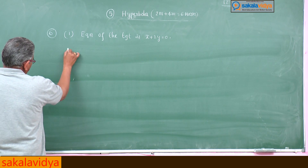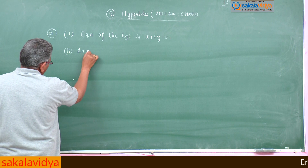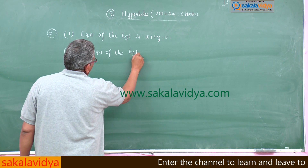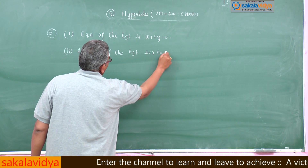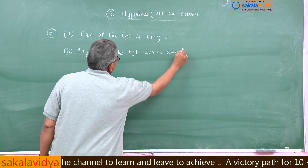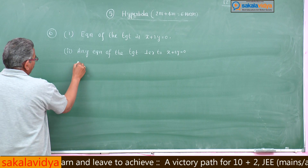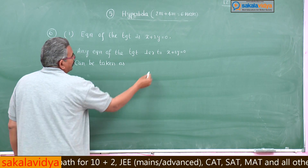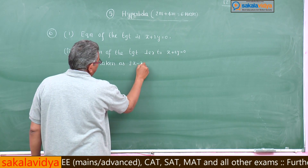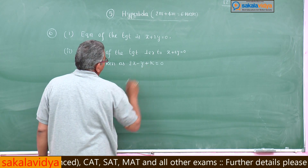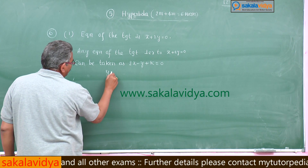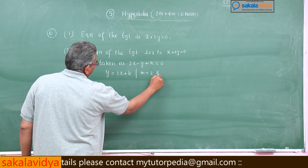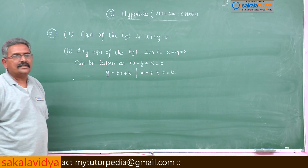For the second part, any equation of the tangent perpendicular to x + 2y = 0 can be taken as 2x - y + k = 0. This can be put in the form y = 2x + k. Here m = 2 and c = k.